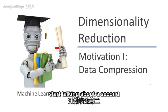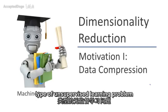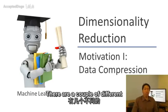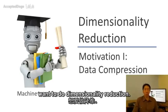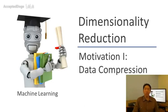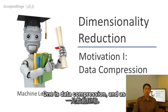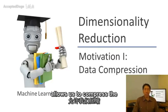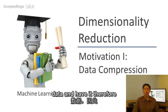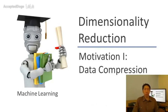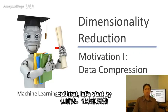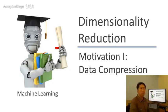In this video, I'd like to start talking about a second type of unsupervised learning problem called dimensionality reduction. There are a couple of different reasons why one might want to do dimensionality reduction. One is data compression. Data compression not only allows us to compress the data and have it use up less computer memory or disk space, but it will also allow us to speed up our learning algorithms. But first, let's start by talking about what dimensionality reduction is.